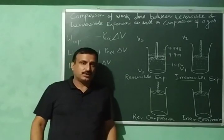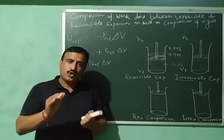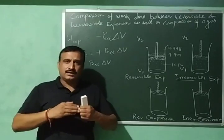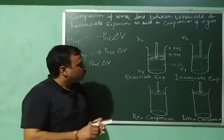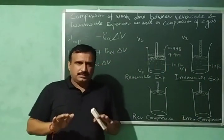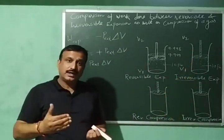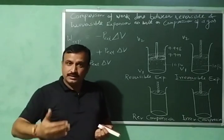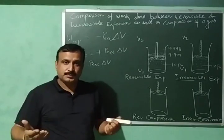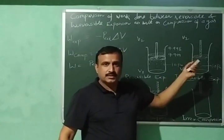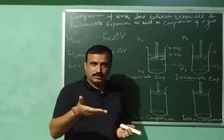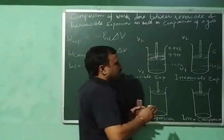In case of irreversible expansion, there are no restrictions. Irreversible processes always occur faster than reversible processes. Suppose the internal pressure is again 10 pascal and the system is at equilibrium. To carry out irreversible expansion, I decrease the external pressure by a significant amount. Suppose the external pressure is decreased to 6 atm, and the gas expands immediately.